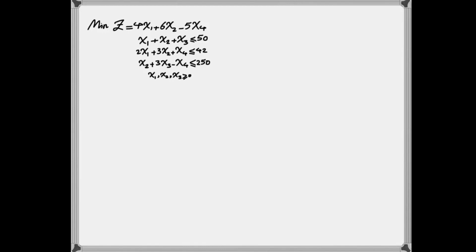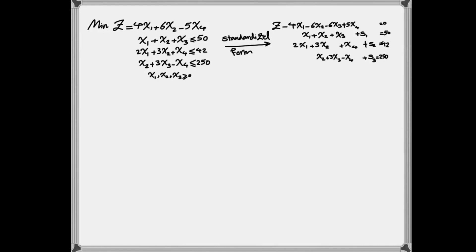To standardize this problem, in the simplex lecture we learned that we have to add slack variables to the three constraints of this problem and bring everything to the left-hand side for the objective function. We also know that all the decision variables must be greater than or equal to zero, which is one of the basic assumptions of a linear programming problem.